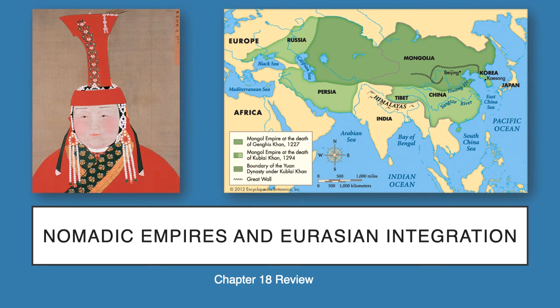Welcome, and in this lecture I'm going to be going over Chapter 18, Section 1, and I'm going to be looking at nomadic empires and Eurasian integration. Taking a look at the map here, when we talk about Eurasia, we're referring to the region that is Europe and Asia — often also called Afro-Eurasia when you incorporate Africa into this whole network.